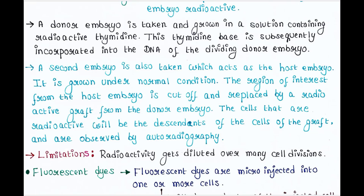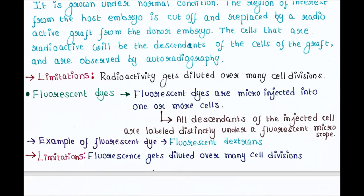The next process is fluorescent dyes. Fluorescent dyes are micro-injected into one or more cells. All descendants of the injected cells are labeled distinctly under a fluorescent microscope. An example of fluorescent dye is fluorescent dextrans. Limitation: fluorescence gets diluted over many cell divisions.